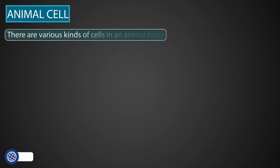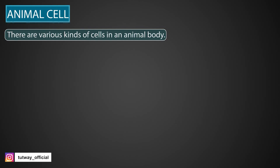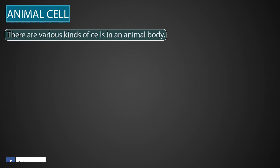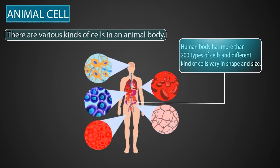There are various kinds of cells in an animal body. All the cells in an animal body, or any organism, are not the same. For example, the human body has more than 200 types of cells. Different kinds of cells vary in shape, size, and functionality.